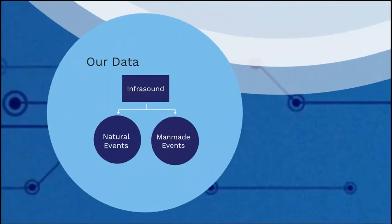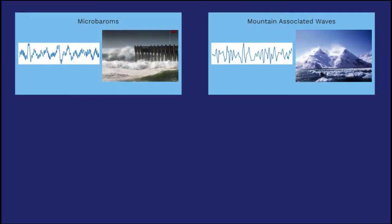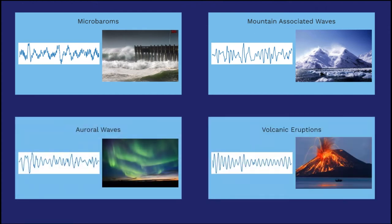Other work in infrasound classification has looked at a wide range of natural and man-made events. In this project, we focused on classifying four types of natural infrasound events. These are microbarums, mountain-associated waves, auroral waves, and volcanic eruptions.